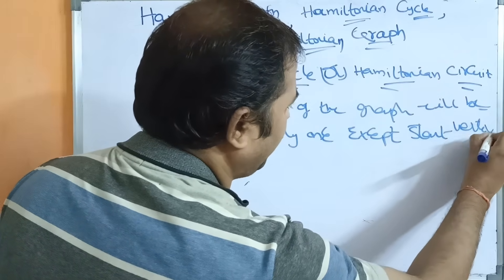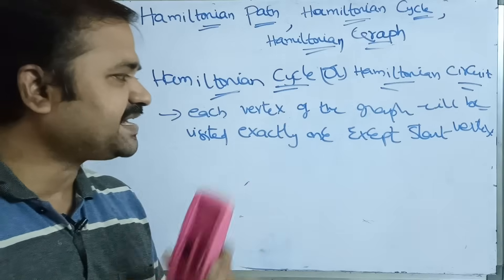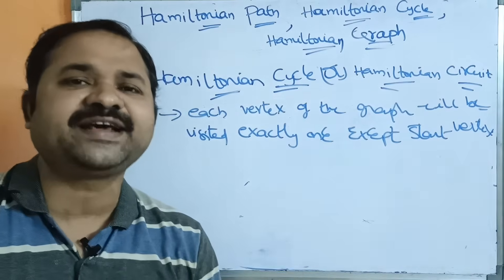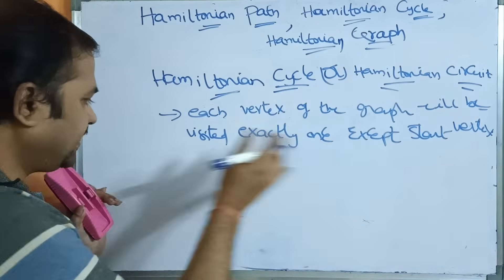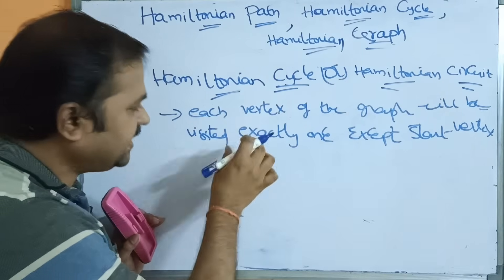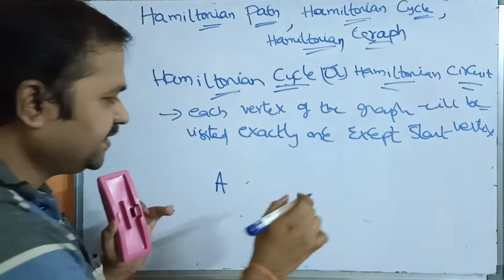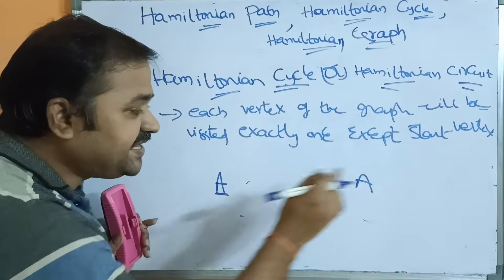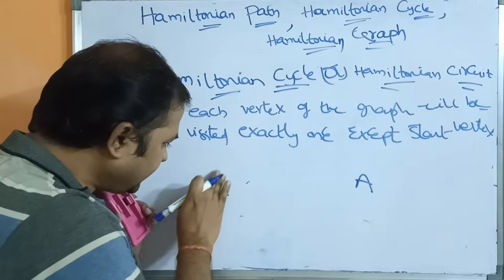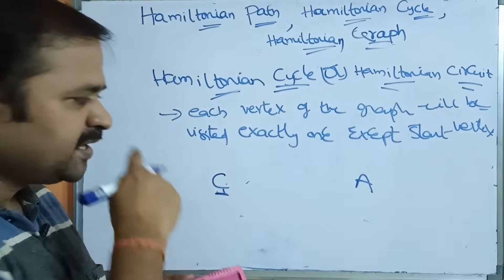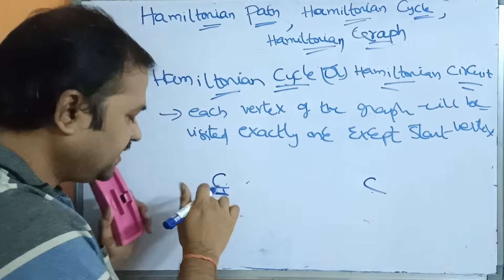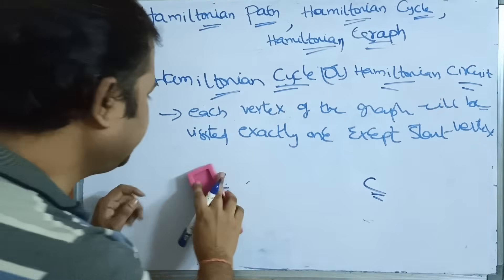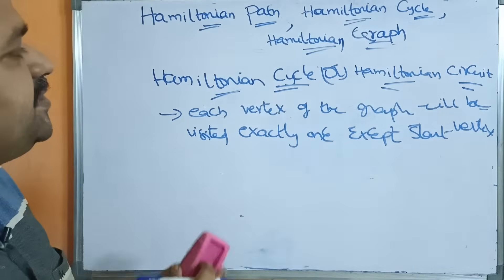Each vertex of the graph will be visited exactly once, except the start vertex, because the start vertex and end vertex must be the same. If the cycle starts at vertex A, it also ends at vertex A. If the circuit starts at vertex C, it should end at vertex C.